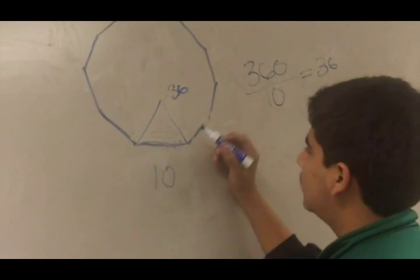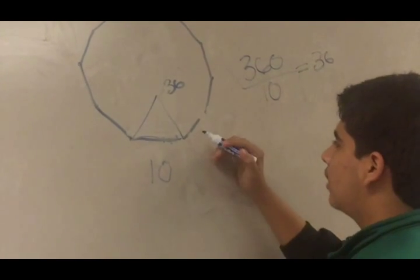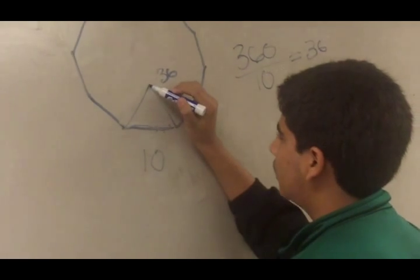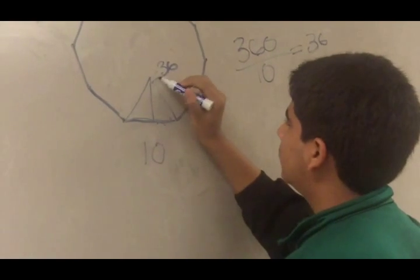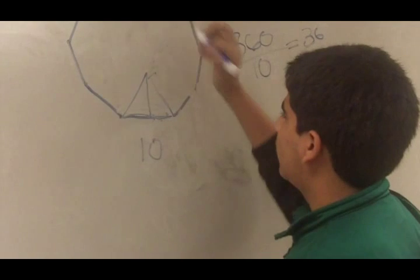I want to bisect it so I can get a right triangle so I can use trig. So I bisect it and this turns into 18.